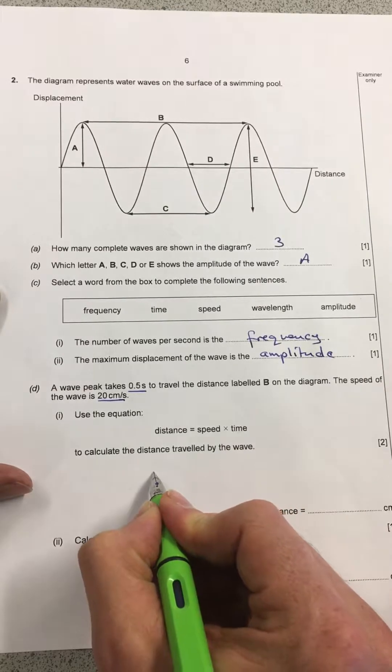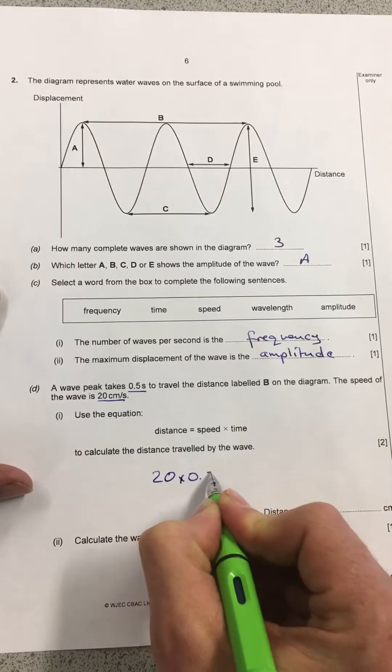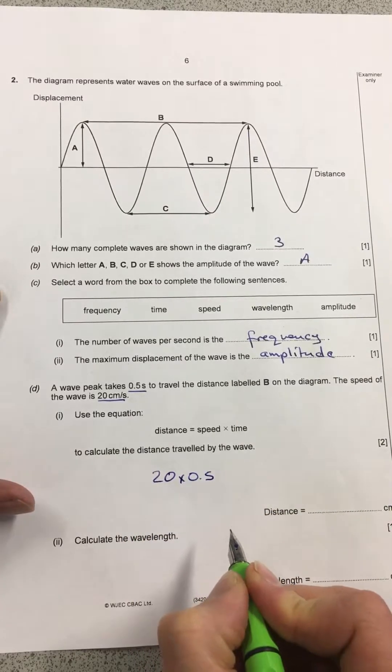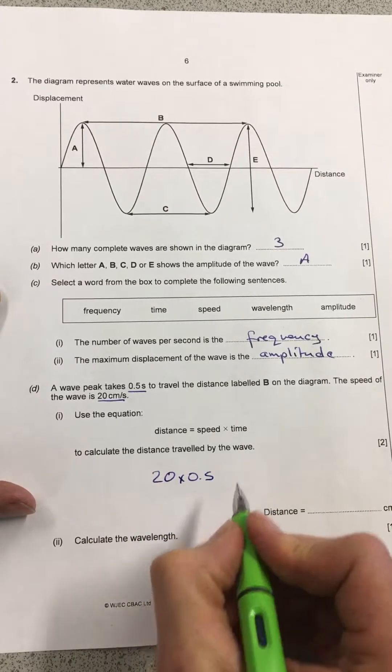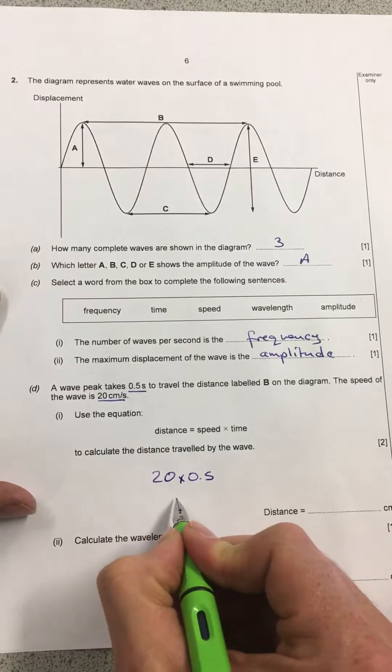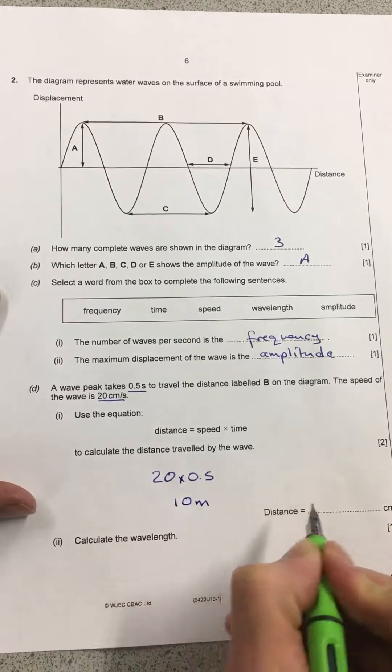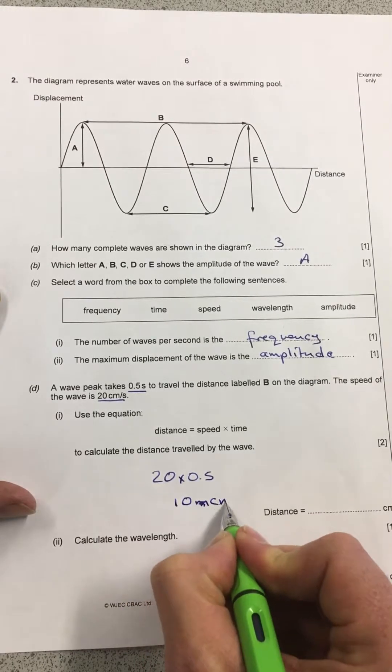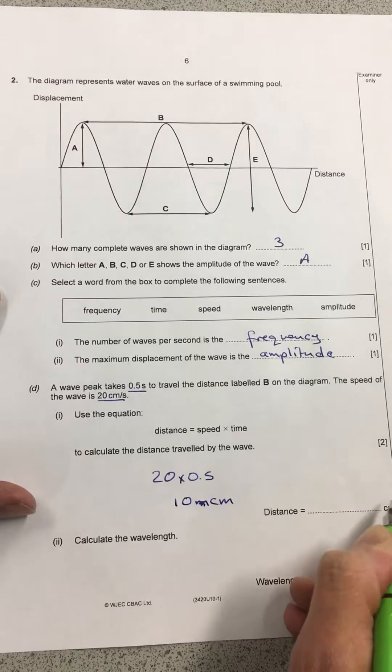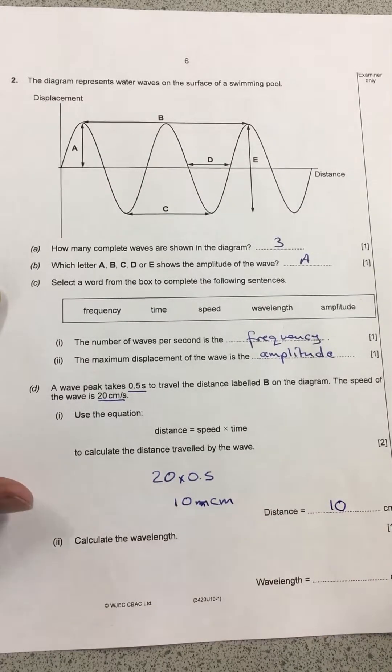So that's going to be 20 times 0.5. Now you're welcome to use a calculator in your physics exams of course, but you might recognize that 0.5 is a half. And a half times 20 is 10 meters. Don't forget your unit, sorry, 10 centimeters. Don't forget your unit, although it is given down here in this corner of the page that you can't quite see on the video. So that's going to be 10 on that line.